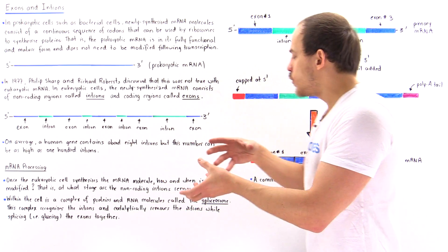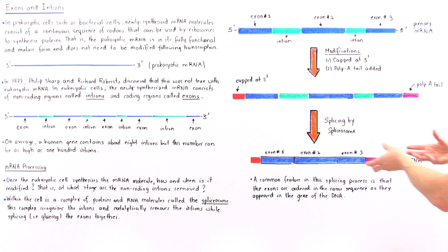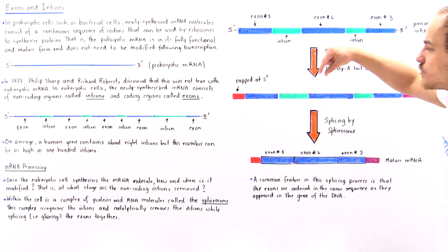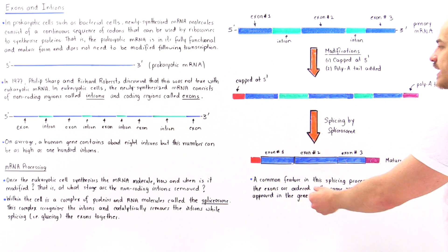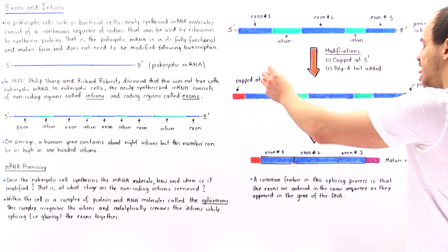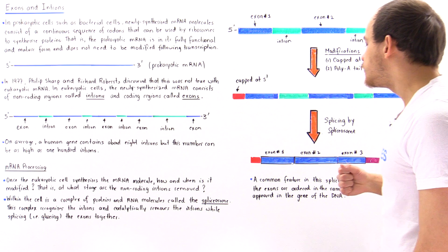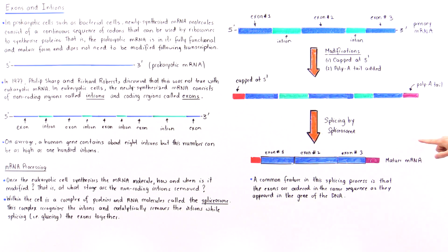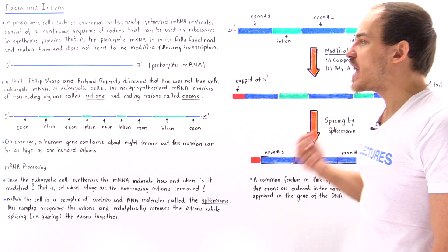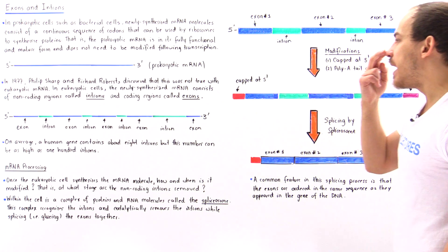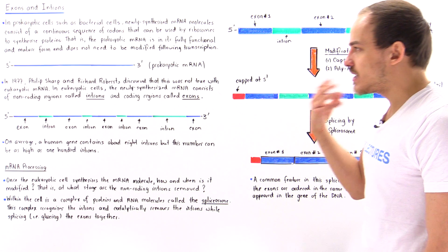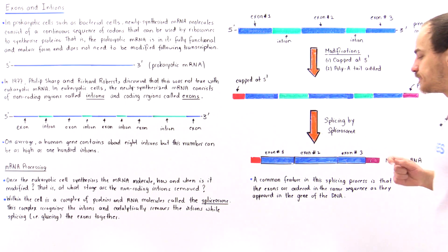So essentially, this spliceosome moves onto our molecule. It removes these introns by essentially noticing specific sequences at the beginning of the introns. And by removing the introns, it then basically connects these exons by forming the proper phosphodiester linkages. And so eventually, we form the following mature and fully functional mRNA molecule that now consists of only these coding regions that contain the codons that can be read by that particular ribosome and synthesize that polypeptide chain.